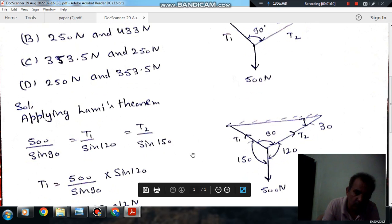Applying Lami's theorem: 500 by sin 90 will be equal to T1 by sin 120 and T2 by sin 150.